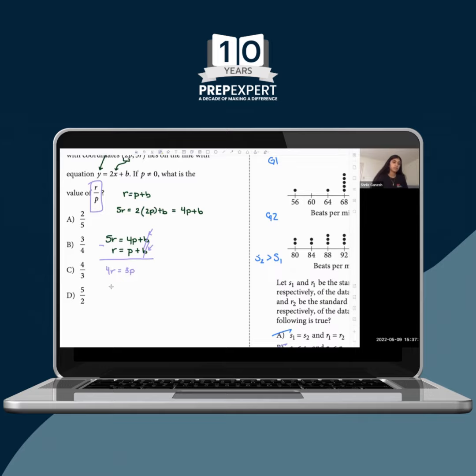So I'm going to divide by p on both sides, and I get 4r over p is equal to 3. And I'm going to divide by 4 on both sides, and I get that r over p is equal to 3 over 4. That's what they're asking us for, and the answer is going to be...